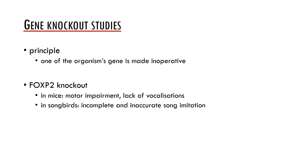One way to analyze what a gene is responsible for is to employ a gene knockout technique used on animals. The principle of this technique is that one of the genes is made inoperative. What is known is that an inoperative FOXP2 gene causes motor impairment and lack of vocalization in mice, and also incomplete and inaccurate song imitation in songbirds.